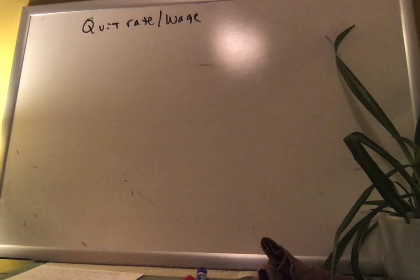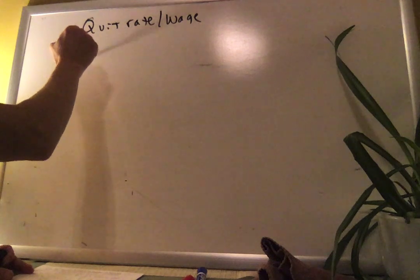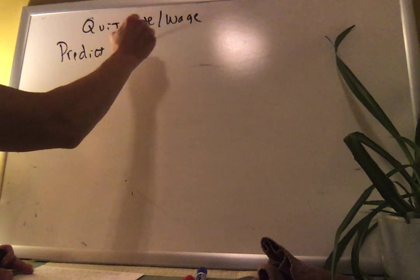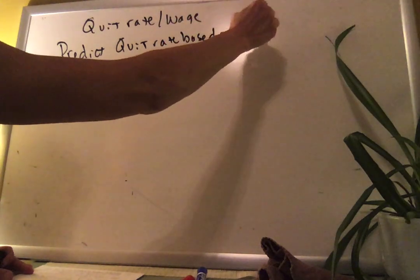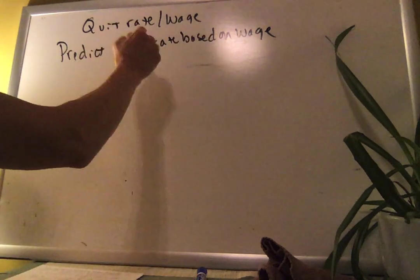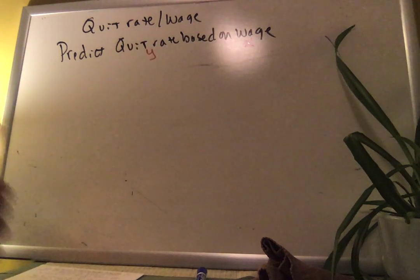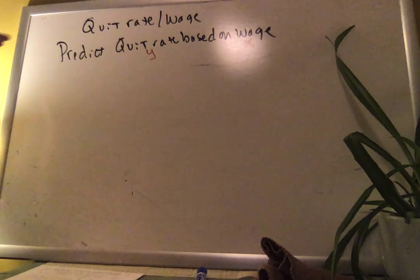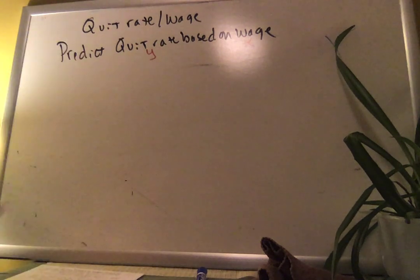This problem actually told us that X is the wage and Y is the quit rate. I would have worded it as 'predict quit rate based on wage' — from that phrasing, you'd know to predict Y based on X, making X the wage and Y the quit rate. Pause and put your data into the calculator, then come back.